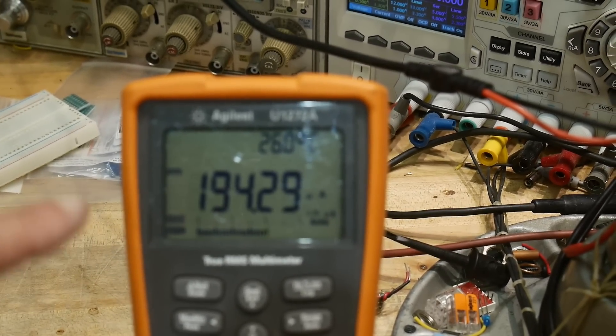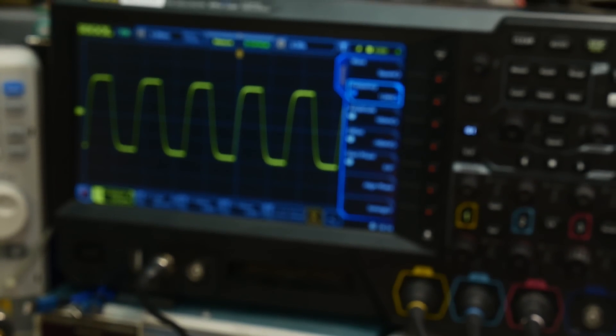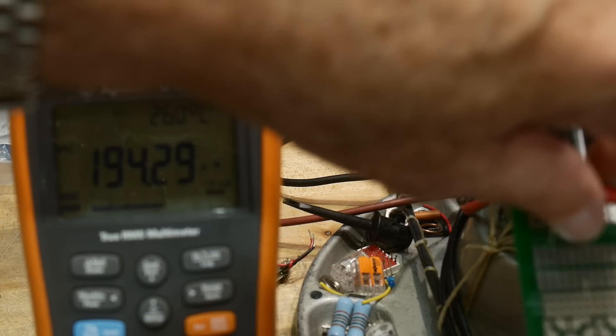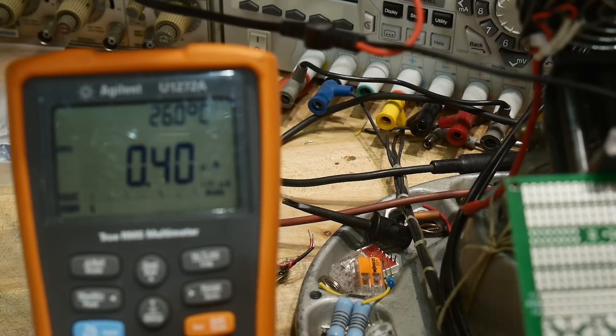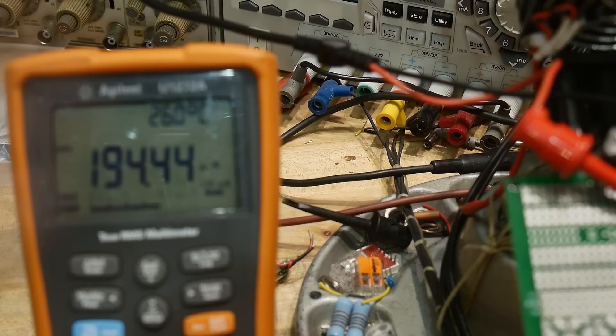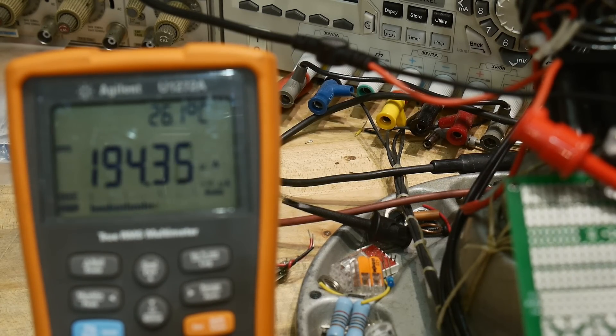So it is gain of 10, but not much bandwidth. But look at the current draw, 190 microamps. Yeah, that is where it shines. Alright, and if I reach over and disconnect the input, it drops down to 400 nanoamps. So yeah, that's pretty cool, super super super low, super super low power.